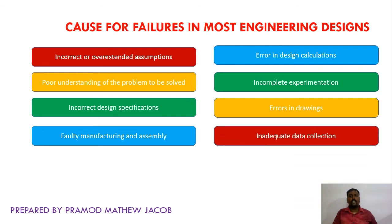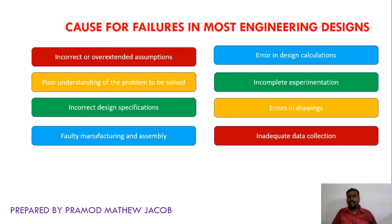The last cause is inadequate data collection. For some systems we have to collect data — for example, if planning to construct a bridge over a river, we have to collect data like the width of the river, the flow of water current, and so on, so that we can accurately design or model the bridge. If the collected data is inadequate or incorrect, it may lead to system failure. These are all the various causes of failures in most engineering designs.